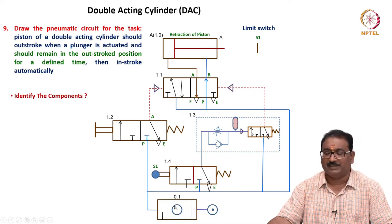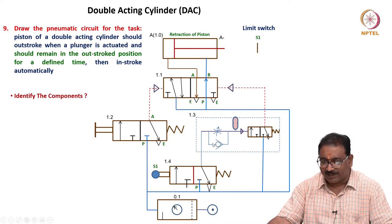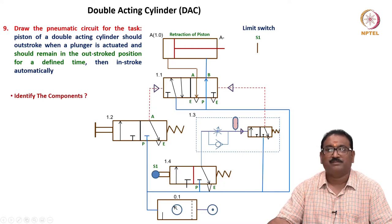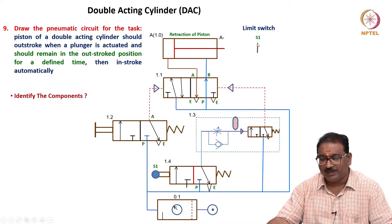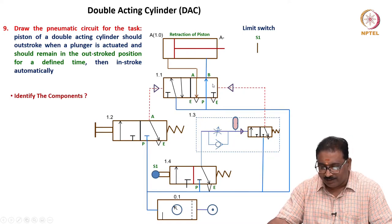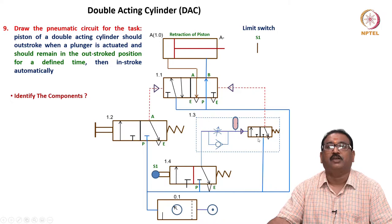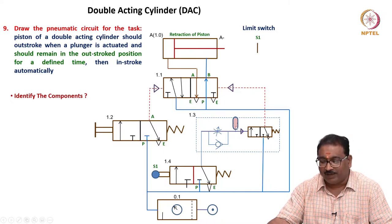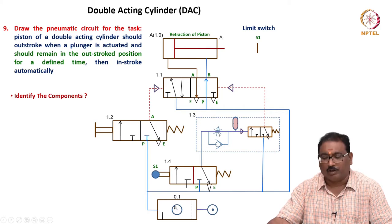Only after the accumulator fills will it actuate - otherwise it will not actuate. The return is through the NRV. This time delay valve is placed here because after reaching S1, the cylinder should wait. The air will come but will not quickly actuate this position - it will fill the accumulator after passing through the throttle with meter throttling, then only it will actuate.